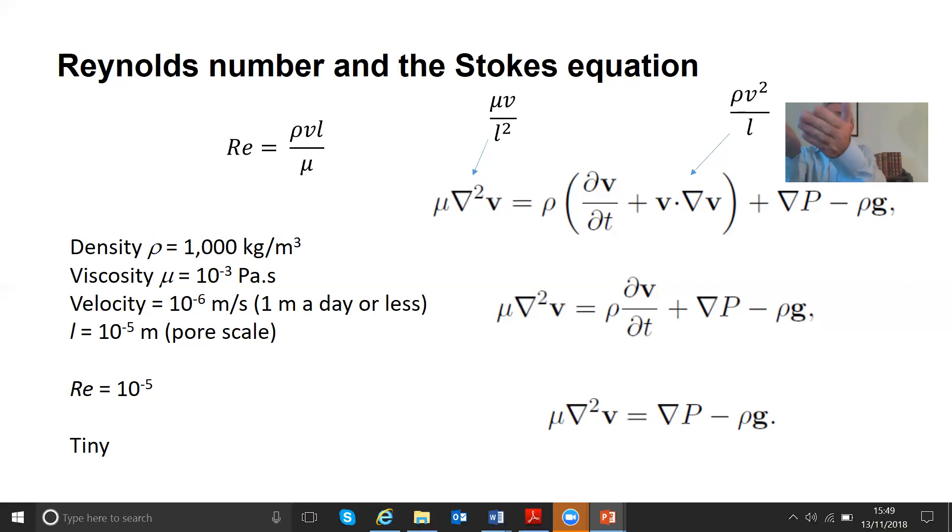Similarly, the mu del squared v term is going to be mu times velocity over length squared. Now the question is, okay, fine, and the ratio of those two is relatively simple to see. An L is going to cancel out, v is going to cancel out. It's in fact the Reynolds number.